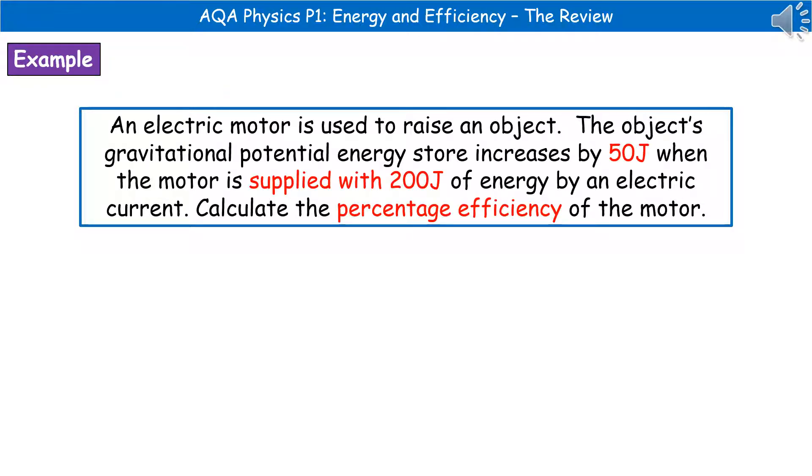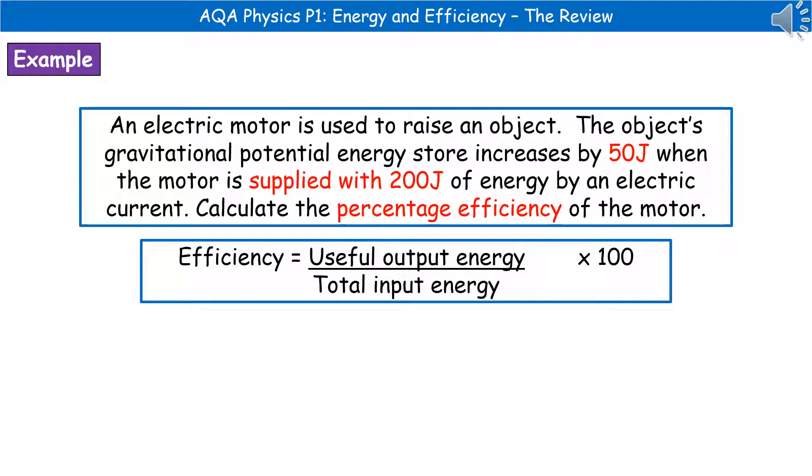The first thing we need to do is, as we read the question, highlight, circle, or underline all of that important information that we need. Second thing to do is to write down the actual equation we're going to use. So efficiency is useful output energy divided by the total input energy times 100.